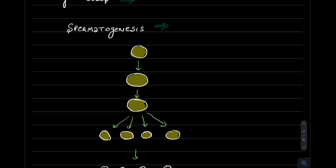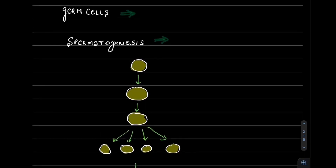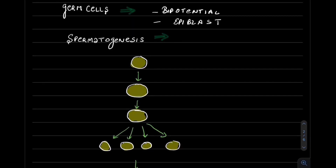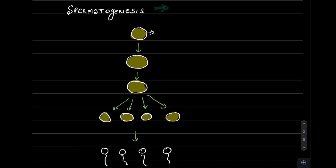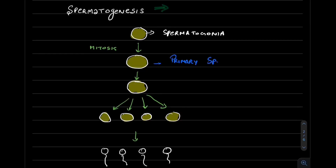Now let's start with germ cells. They are bipotential and derived from the epiblast. In spermatogenesis: spermatogonia (46XY) undergo mitosis to become primary spermatocytes, which are also 46XY.